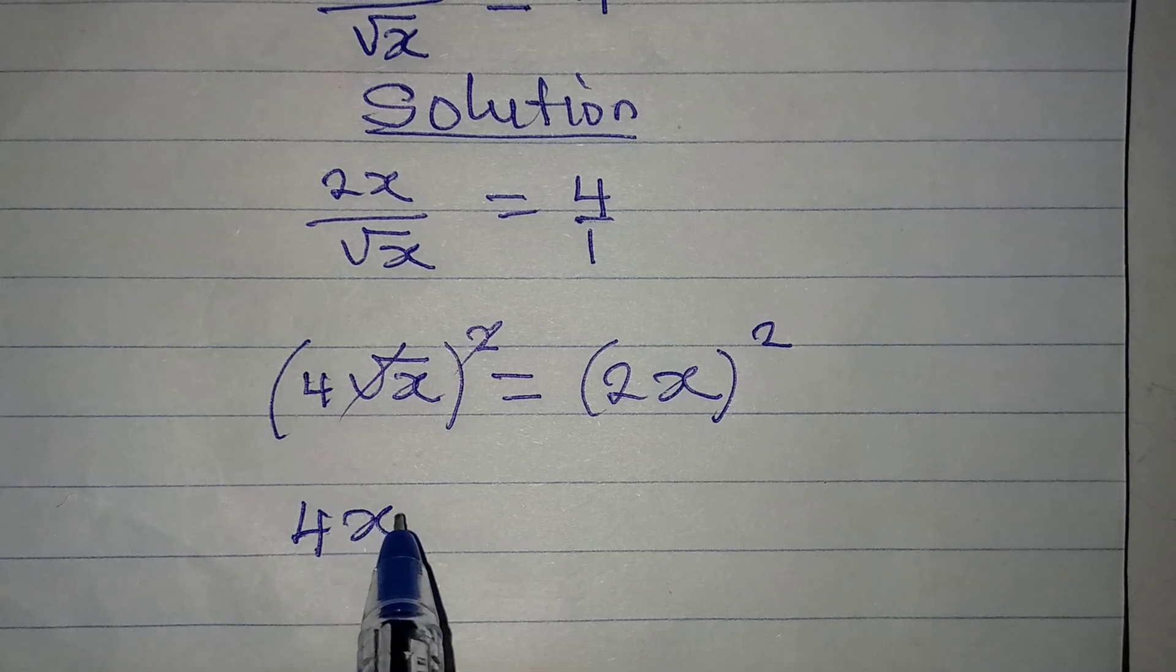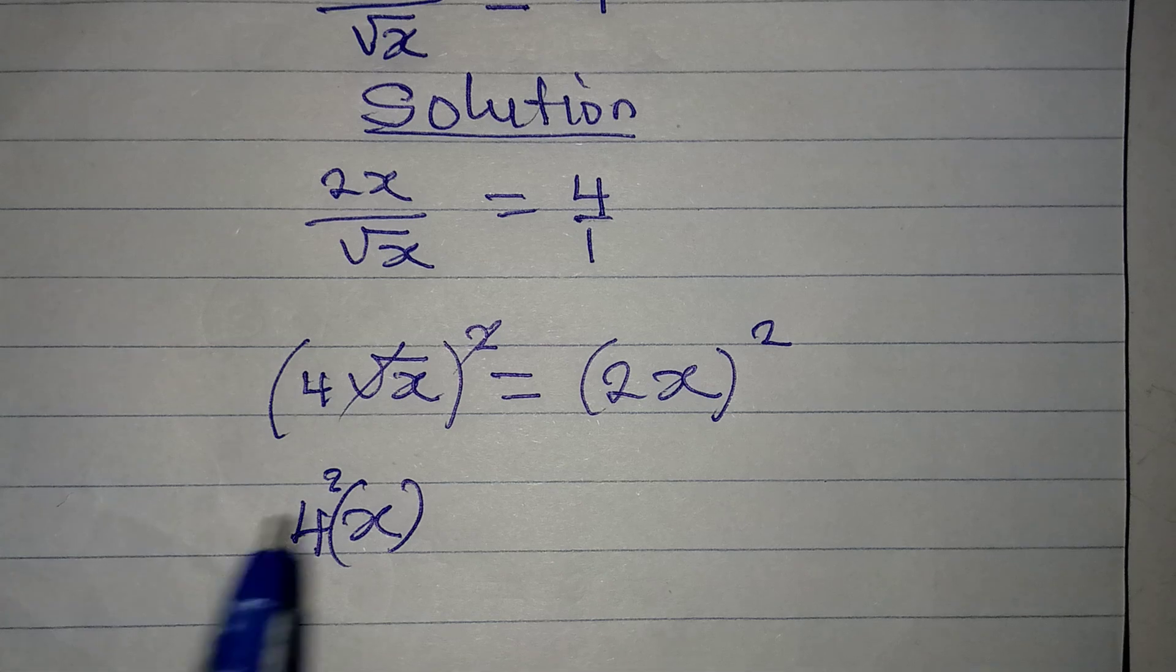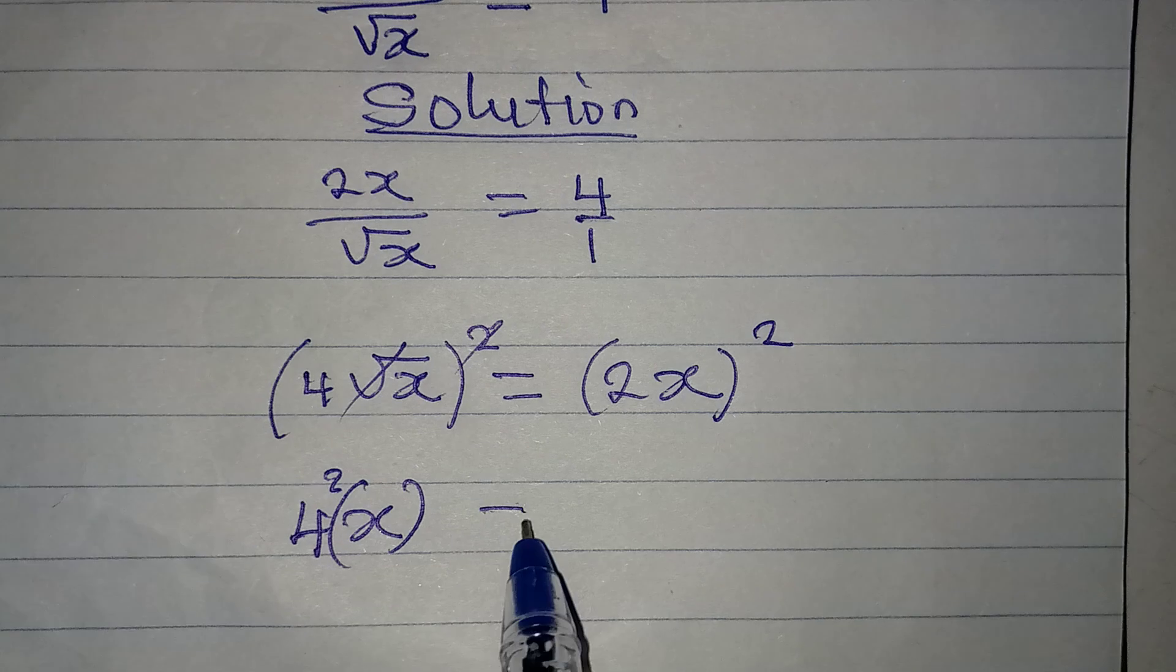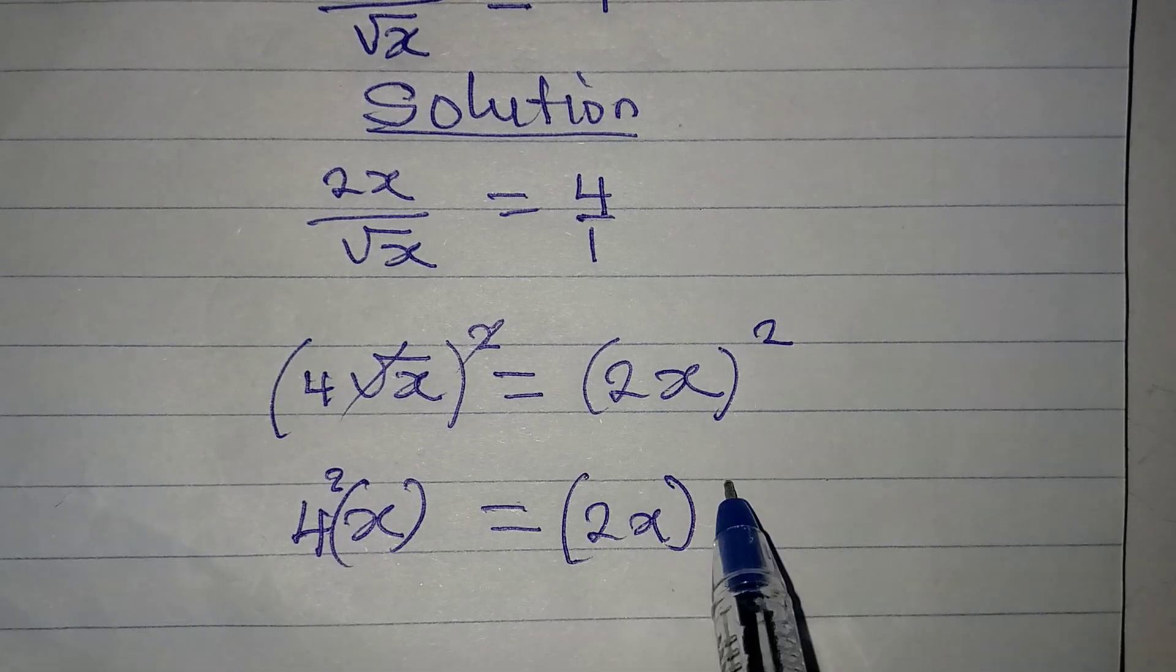This is supposed to be 4 squared because this square will affect this and x here will now be alone. This will be equal to 2x squared.